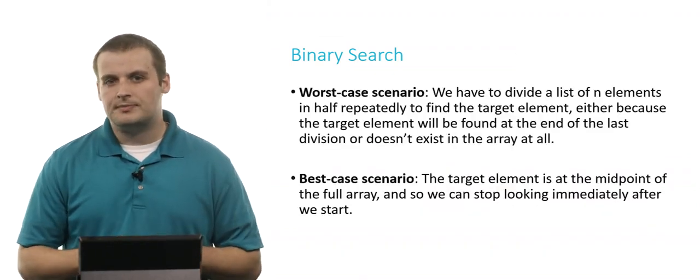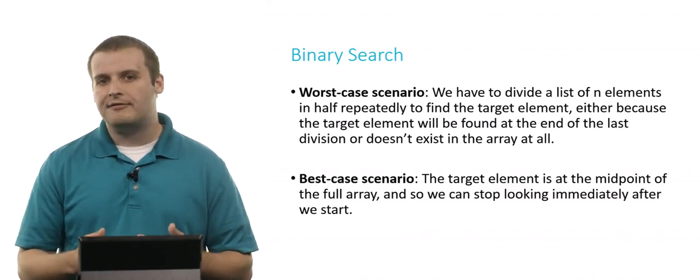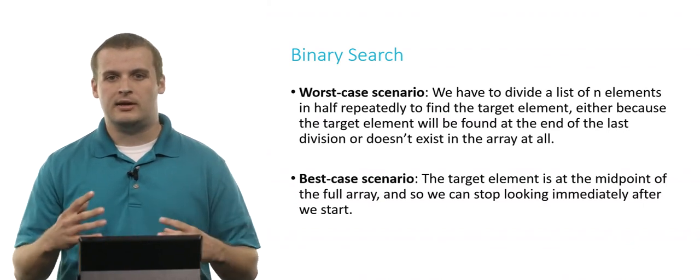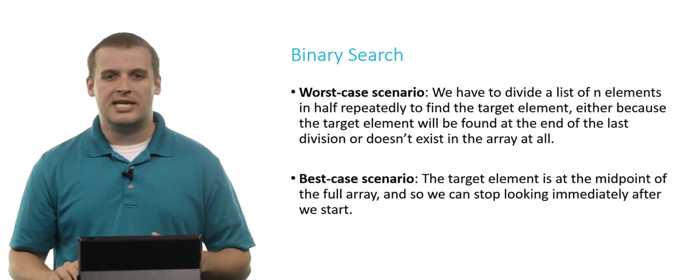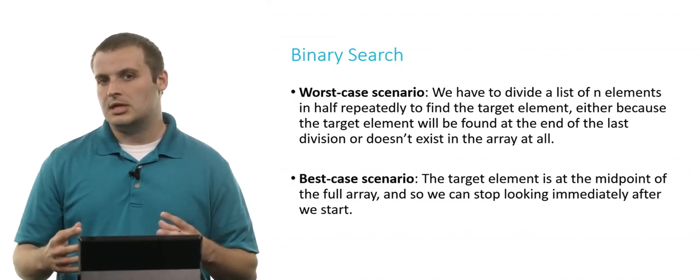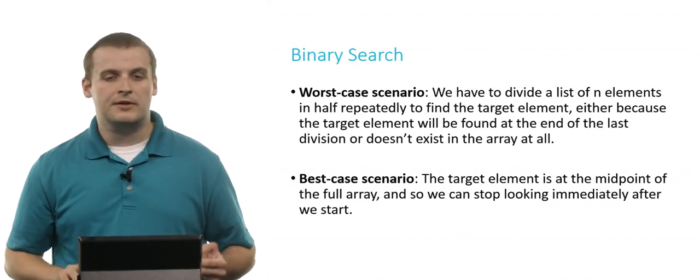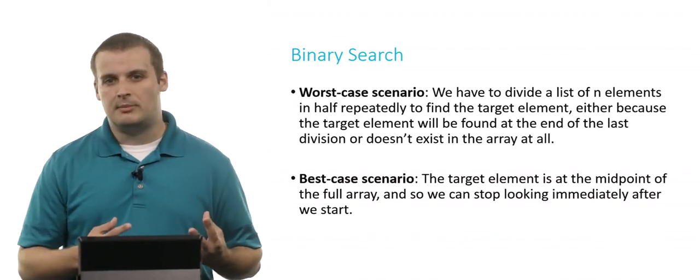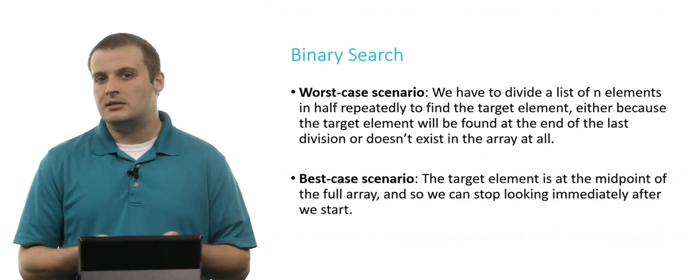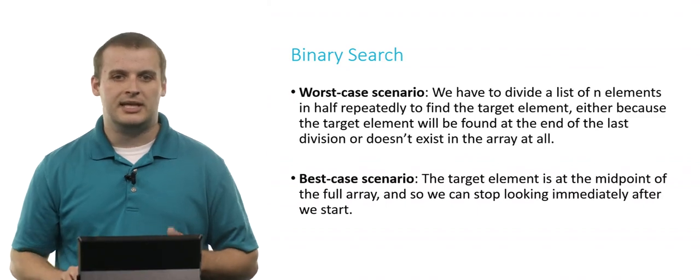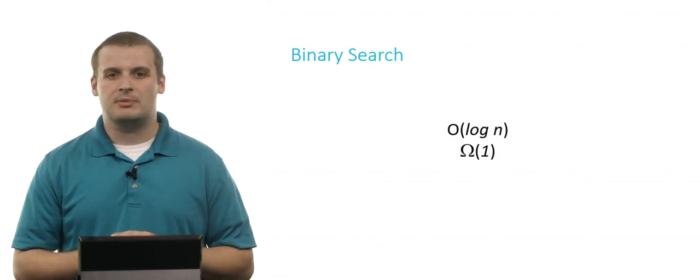This took far fewer steps than linear search. In the worst case scenario, we had to split a list of n elements repeatedly in half, which happens log n times. So binary search runs in O(log n) in the worst case, which is substantially better than linear search. In the best case, the first midpoint we calculate is exactly what we're looking for — for example, if we had been searching for 15, we would have found it immediately. So binary search runs in Ω(1) in the best case. But you do have to deal with sorting your array first before you can leverage the power of binary search.